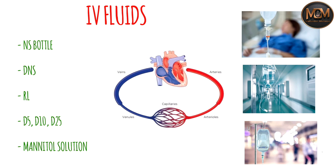First of all, we have to understand this with the help of a diagram — where do we need to put the IV fluids and what would be the pathway. You have heard there are two vessels: veins and arteries, which arise from the heart. Arteries take oxygenated blood from the heart and go to the rest of the body. Veins carry blood from all the tissues back to the heart. Whatever fluid we put, we need to inject it into the veins so it will go to the heart and then be pumped throughout the body.